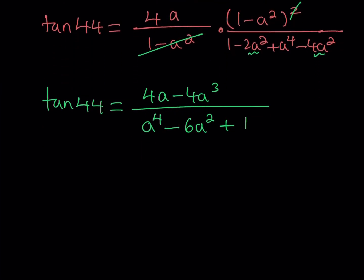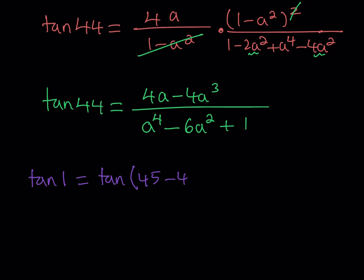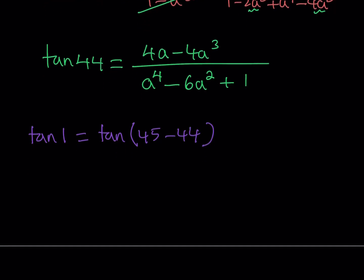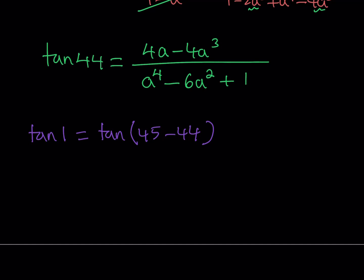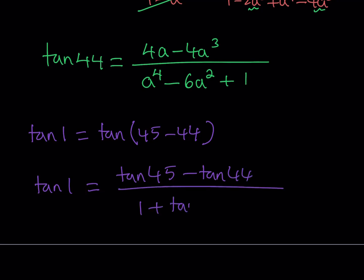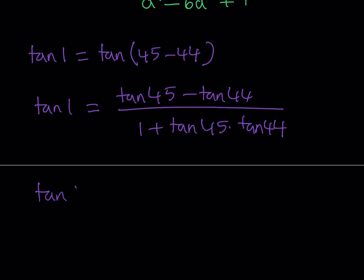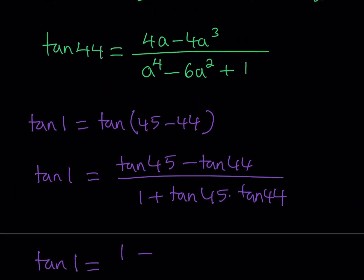So I'm going to write tangent 1 as tangent of (45 minus 44). Using the difference formula for tangent — tangent alpha minus beta equals (tangent alpha minus tangent beta) divided by (1 plus tangent alpha times tangent beta) — tangent 1 equals tangent 45 minus tangent 44, divided by 1 plus tangent 45 times tangent 44. And tangent 45 equals 1, which gives us a nice expression.